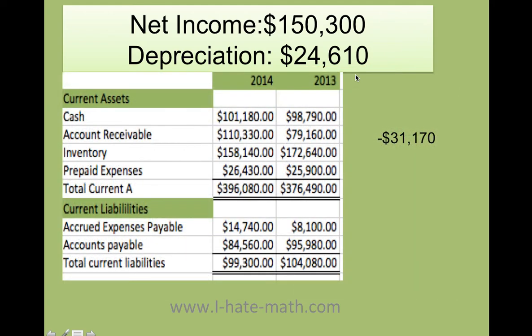Let's go ahead and understand what's going on with every single activity. In 2013 you start with your accounts receivables. You had 79,000 and I'm just gonna round up the numbers to make the problem easier. And in 2014 you had 110,000. This means that last year people were paying you but now in 2014 you have more invoices due. They owe you the money, you don't have the money in your pocket, so you need to subtract the difference between 79,160 and 110,330.